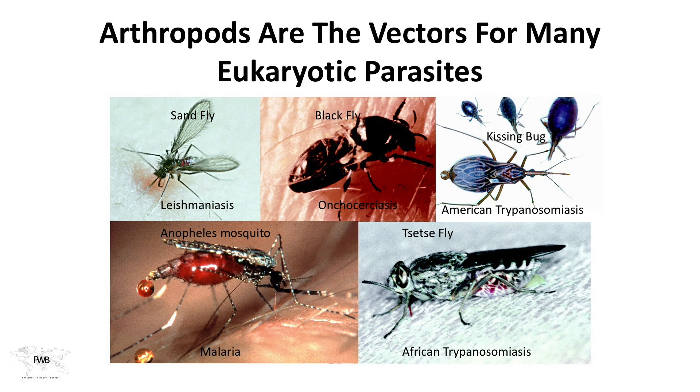We call these arthropod-borne vectors. Arthropods are jointed-legged animals — some are insects, some are arachnids. The ones depicted here are all insects with six legs; some fly, some crawl, depending on their life stage. All of the ones shown transmit what I consider to be major health-altering infections, many of which have proven lethal. Controlling the vectors is a key strategy for controlling these infections, rather than relying solely on drugs or vaccines. We have many intervention strategies that limit how many of these arthropods are in the areas where we live.